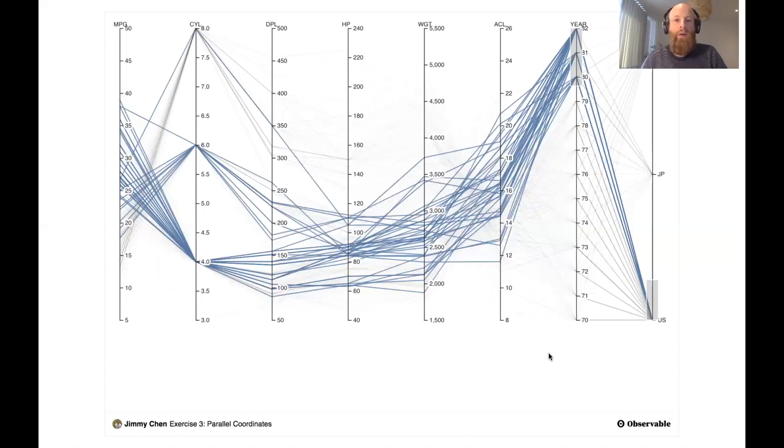So this is basically how parallel coordinate plots work. You arrange the axes next to each other and you connect the values for each record. And as said, you have to take care of the ordering of the axes. Otherwise, it might end up as a mess or you won't be able to get anything insightful from the chart.